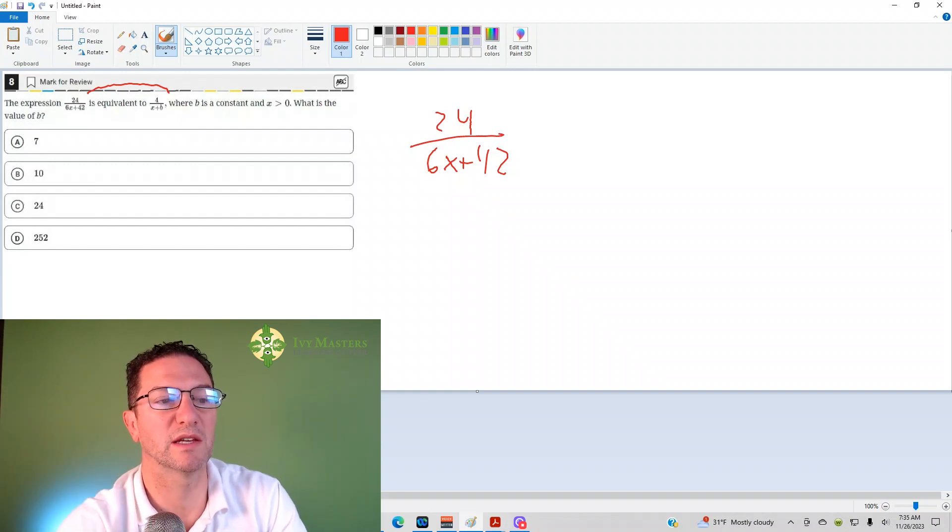How do you get from 6x to x? You divide by 6. How do you get from 42 to b? You divide by 6.